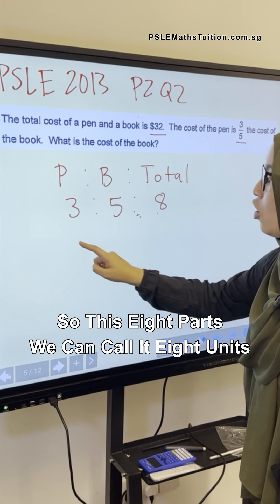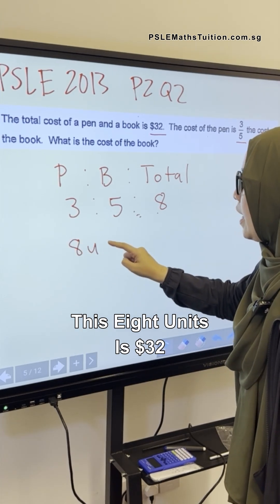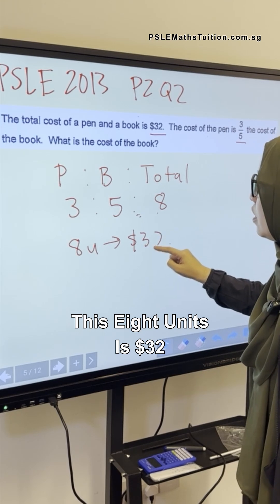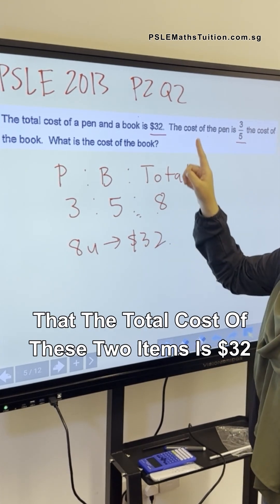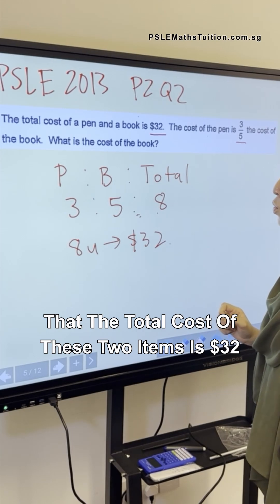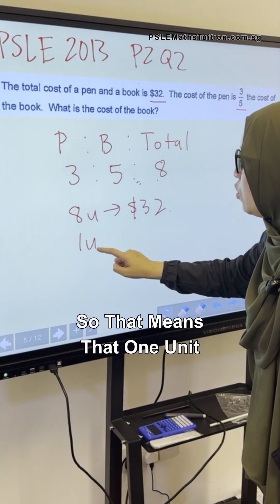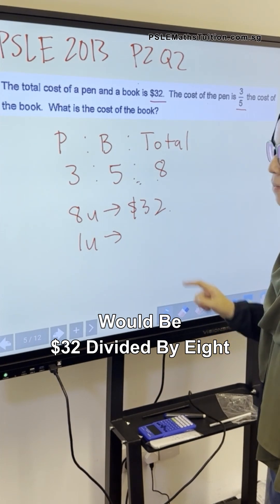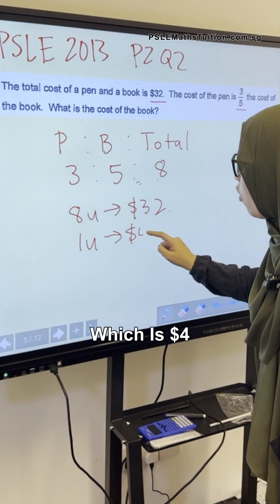This eight parts, we can call it eight units. This eight units is $32 because the question tells us that the total cost of these two items is $32. So that means that one unit would be $32 divided by eight, which is $4.